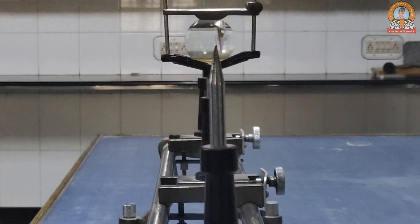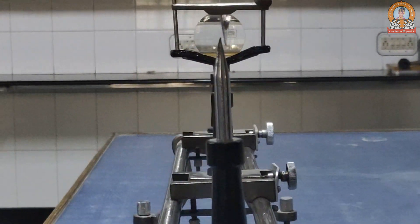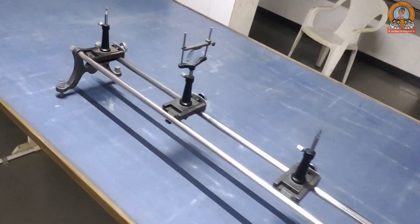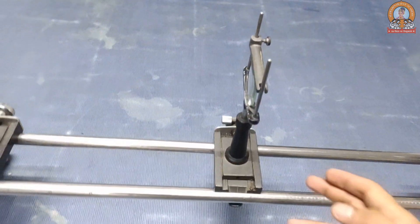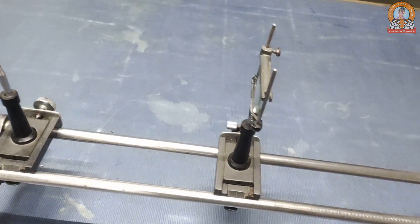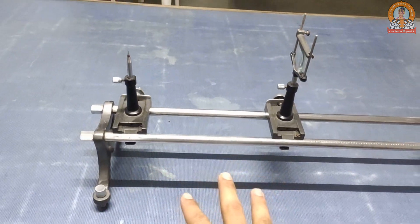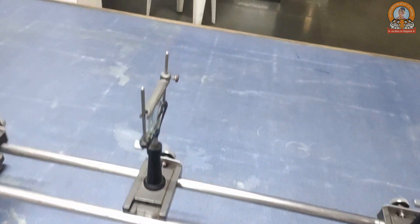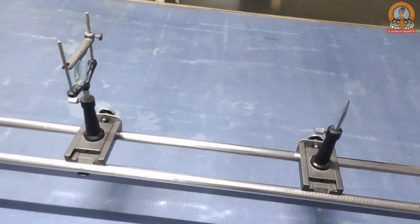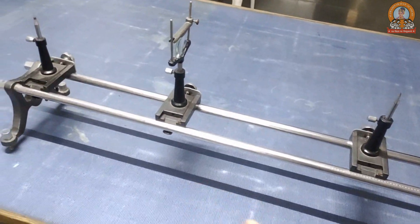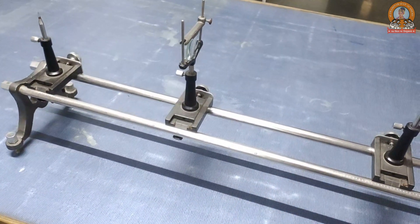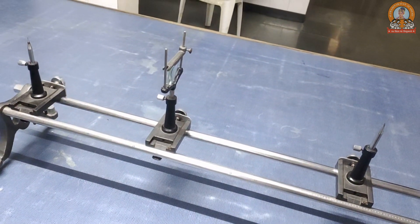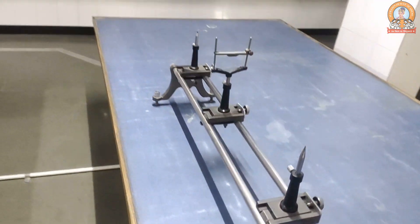This is for object at 2f, so image will be at 2f. Two more readings we have to take: beyond 2f and between f and 2f. For next two readings, we'll simply push it a little forward. So now this object is between f and 2f of the lens, so the image will be formed beyond 2f. Keep in mind our practical focal length came out to be 17 centimeter.